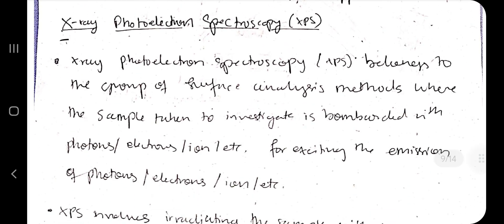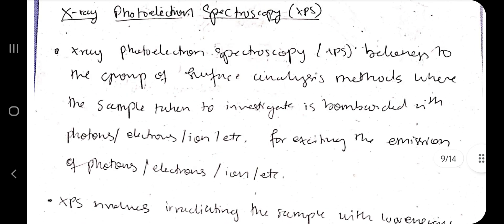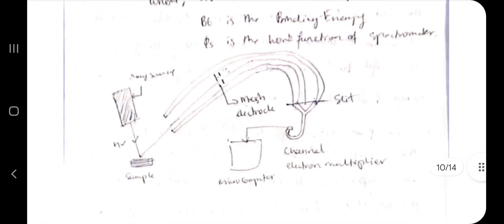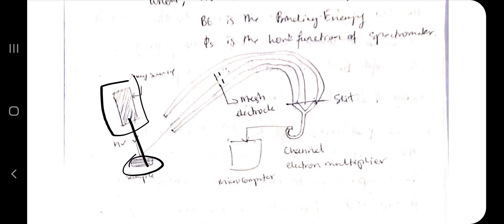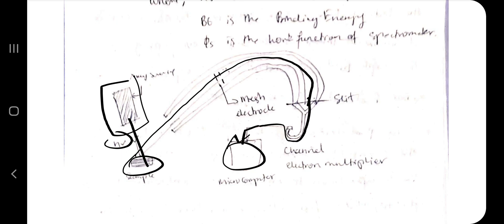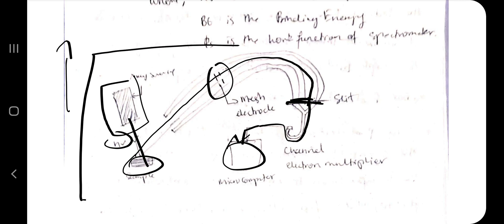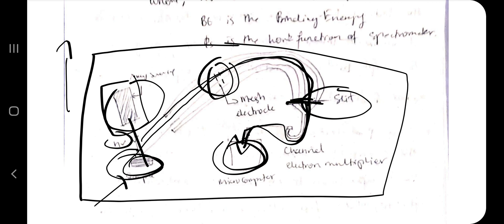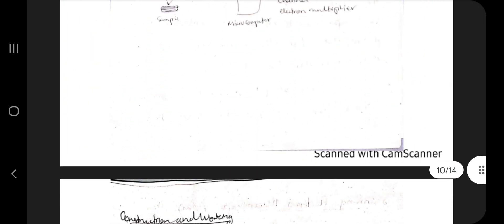The next technique is X-ray Photoelectron Spectroscopy. It is a surface analysis method that works by exciting the emission of photons and electrons. X-ray waves are emitted, hit the sample, reflect with frequency hν, and pass through the instrument to a microcomputer where readings are recorded. Mesh electrodes improve precision, and a slit is used for diffraction. The rays coming in get deflected from the sample, pass through the instrument with mesh electrodes and slit, and the data is recorded by the microcomputer.